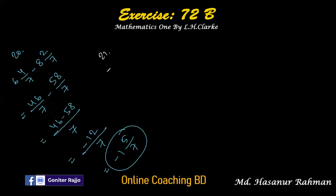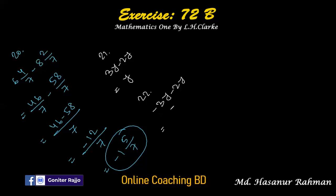Number 21: 3y minus 2y should be y. Number 22 says minus 3y minus 2y. Both have the same sign, so we add and the answer should be minus 5y.